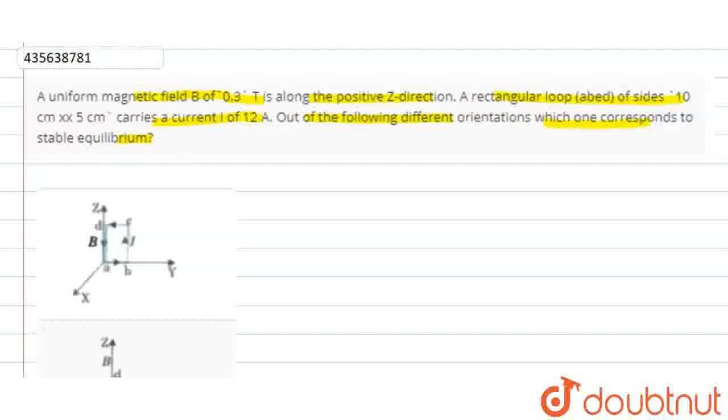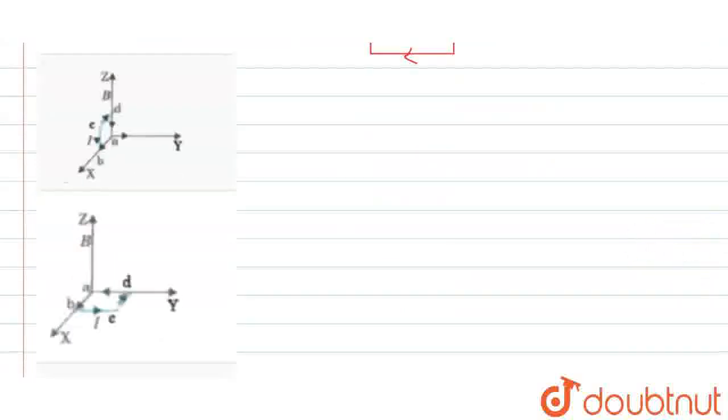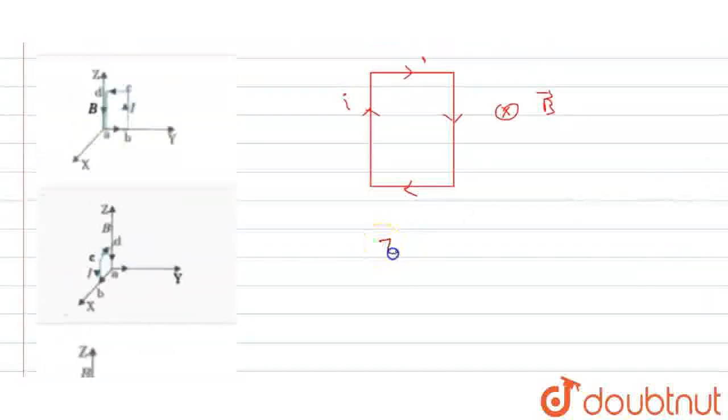Dekho, jab bhi koi current-carrying loop magnetic field mein present hai, to us pe ek torque lagta hai. Torque kitna hota hai? M cross B. M kya hota hai? Agar current I and area A hai, magnetic moment hota hai M equals I into A.